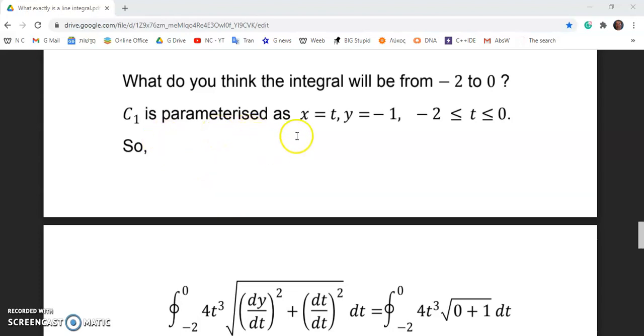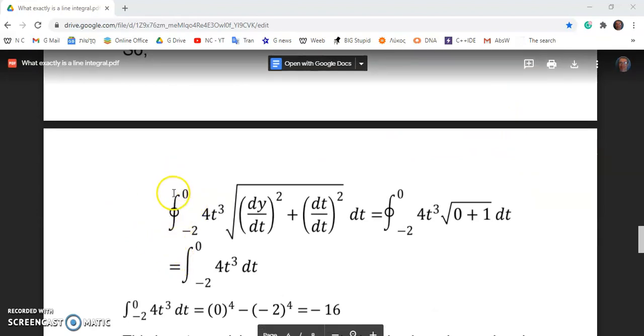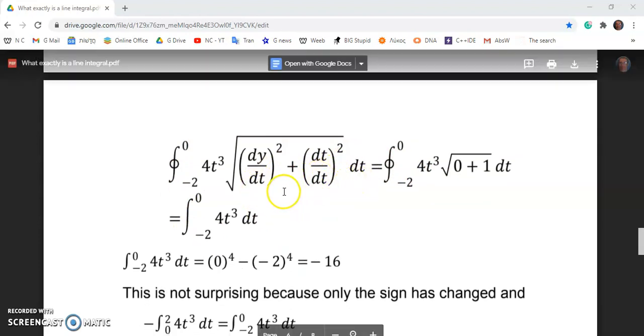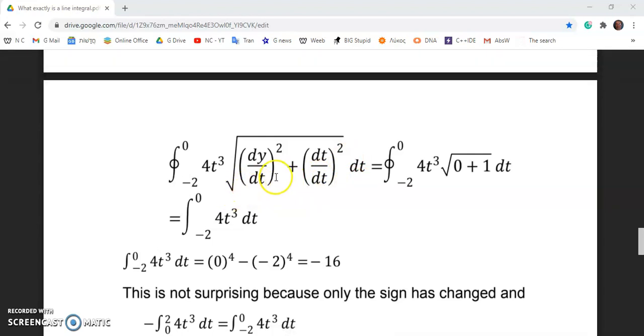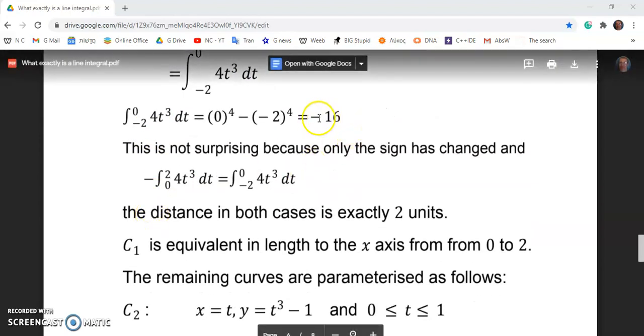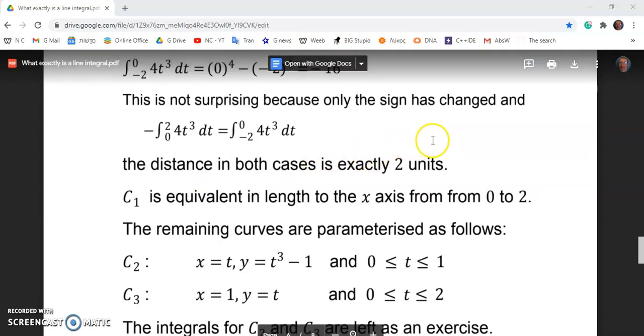So what do you think the integral will be from minus 2 to 0? And so this is pretty advanced, and you need to have studied this before in order to understand, but I'm sure some of you have, and that's why I'm talking about it. C1 is parameterized as x is equal to t, y is equal to minus 1, and t lies between 0 and minus 2. So if you calculate this integral from 0 to minus 2, as you see I'm doing here, and it doesn't matter that I've written dt because I could have written dx as well, but I've parameterized it with time. And that's why I've written it down this way.